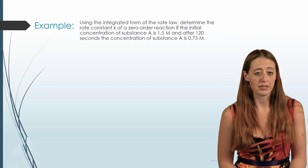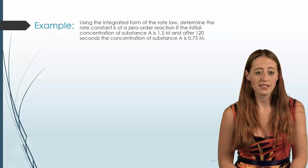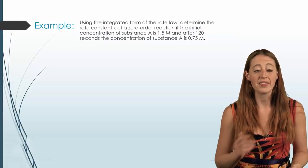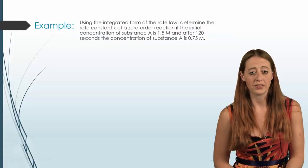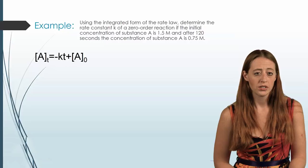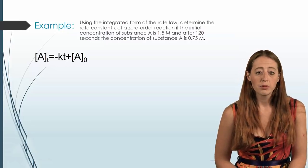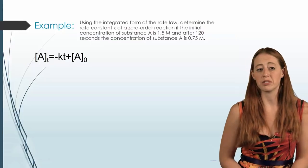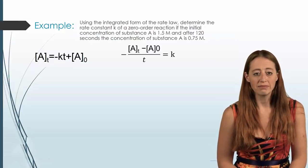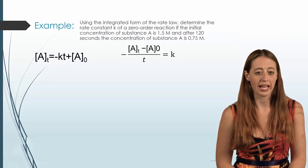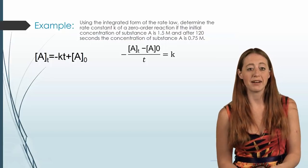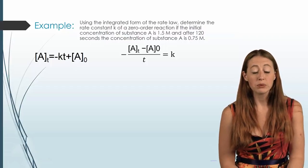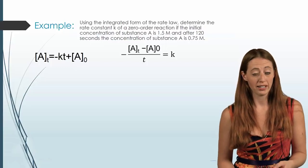You'll often be given a problem like this: using the integrated rate law, determine the rate constant k for a zero order reaction. I give you the initial concentration and the time it runs to get another concentration. To determine k, I need to rearrange: subtract A-naught and then divide by t. You can also fill in numbers first and then rearrange — either way is fine.